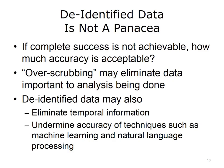By the same token, when we over-scrub the data — in other words, when we remove identifiers — we may end up eliminating data that's important to the analysis being done, whether it's research or quality measurement. When we de-identify data, we may eliminate things like temporal information. We may de-link the various healthcare episodes that a patient has had, and this information may be important in longitudinal analysis. In addition, we may undermine the accuracy of techniques such as machine learning and natural language processing that operate on this data. When it's de-identified, we don't know how that affects the accuracy of these computational processes.